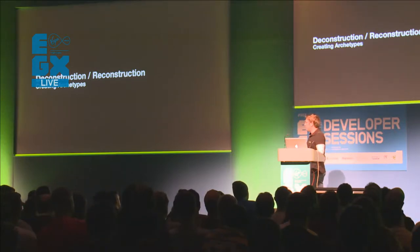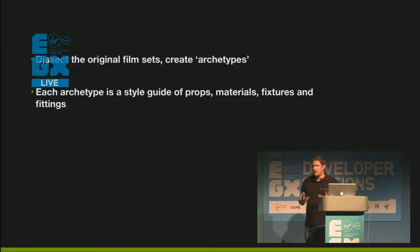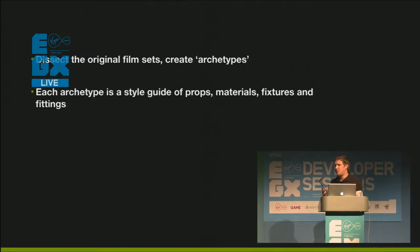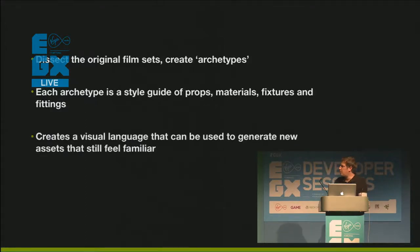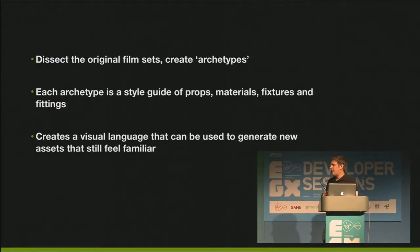What we would do is create archetypes. An archetype would be a style guide of props, materials, fixtures, fittings - everything that we could work out. How did they light those spaces? What materials did they use to build the sets and how would they react to the light? This would be used to create a visual language which we could then move on from and create whole new assets and whole new spaces for Sevastopol that looked and felt like they could have been just beyond a closed door on the Nostromo - they'd feel authentic but still be original, still be new for the player.